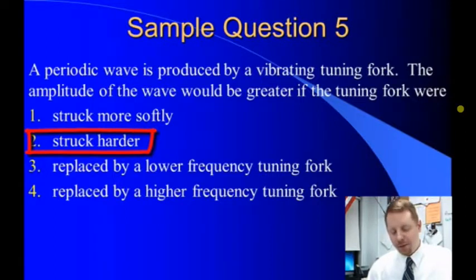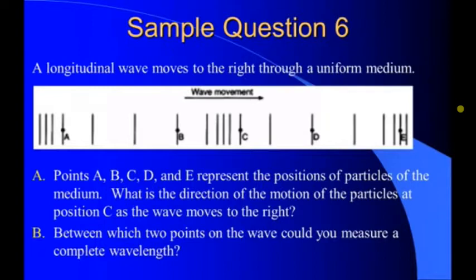Let's try one last sample problem. A longitudinal wave moves to the right through a uniform medium. Points A, B, C, D, and E represent the positions of particles of the medium. What is the direction of the motion of the particles at position C as the wave moves to the right? Well, if the wave is moving to the right, that means the particles in the wave must vibrate in the same plane, left and right. So, as the wave moves to the right, C must move to the right and to the left.